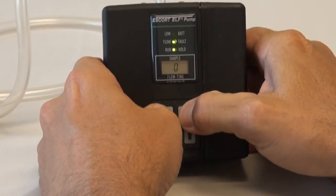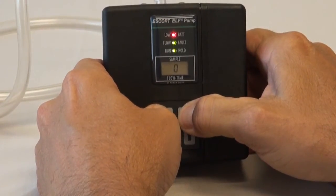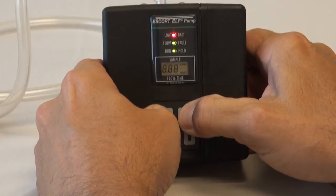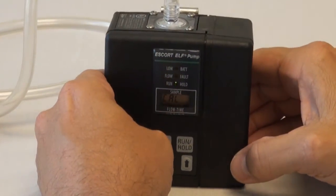As the pump goes through its self-check sequence and the LED lights illuminate, press and hold the on-off and the run-hold button simultaneously until the display reads CAL. Immediately release both buttons.